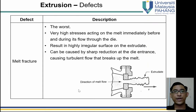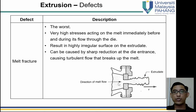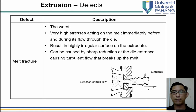There are several types of defects that can result from the extrusion process. Melt fracture is the most severe — very high stress acts on the melt immediately before and during flow through the die, causing an irregular output that does not match the die shape. It can be caused by a sharp reduction at the die entrance, causing turbulent flow and breakup of the melt.